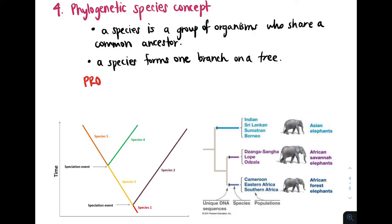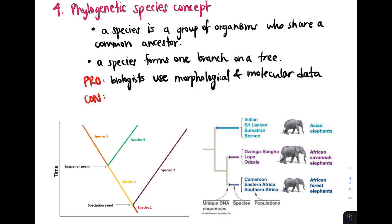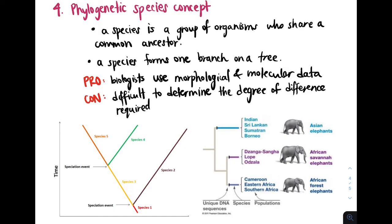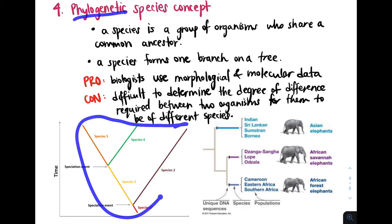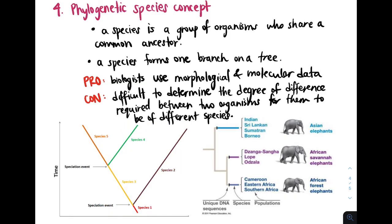One pro of the phylogenetic species concept is that biologists use both morphological and molecular data to create these phylogenetic trees. One con is that it's difficult to determine the degree of difference needed between two groups for them to be considered separate species. I really hope this video helped — please like, comment, share, and subscribe, and send me any video requests you have. Thank you!